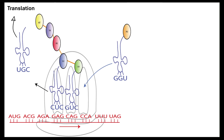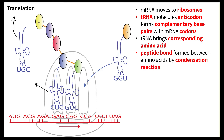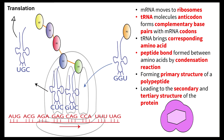Let's remind ourselves about translation. Our mRNA moves to the ribosome. The tRNA molecule's anticodon forms complementary base pairs with the mRNA codon. The tRNA brings along the corresponding amino acid. A peptide bond is formed by a condensation reaction, and we end up with our primary structure of the polypeptide, which will then lead to the secondary and tertiary structure of the protein.